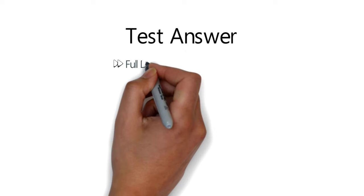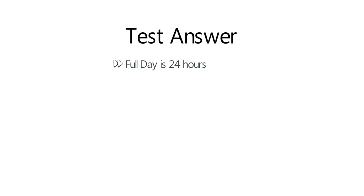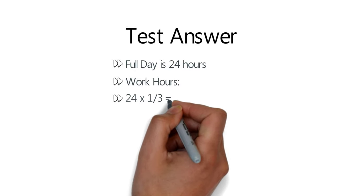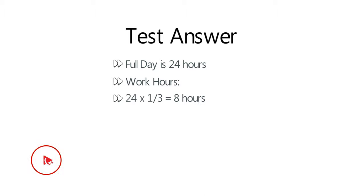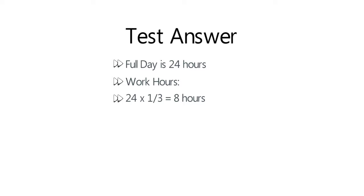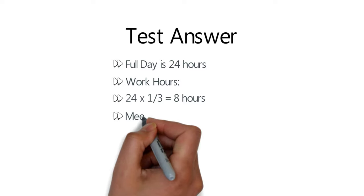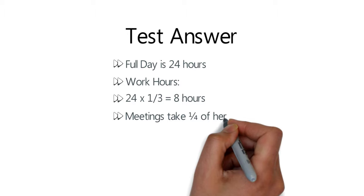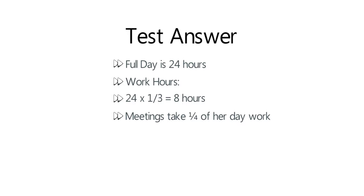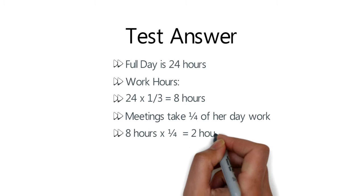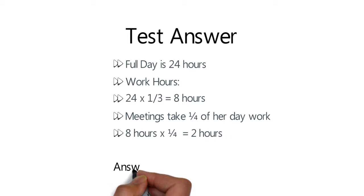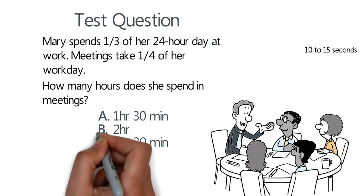A full day has 24 hours. Mary's working hours represent one-third of the full day, which is 24 ÷ 3 = 8 hours. Meetings take one-fourth of her workday, so to calculate time in meetings: 8 × (1/4) = 2 hours. The correct answer is choice B, two hours. Hopefully you've nailed this question.